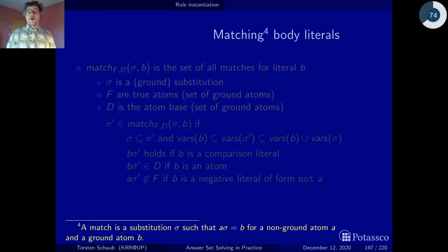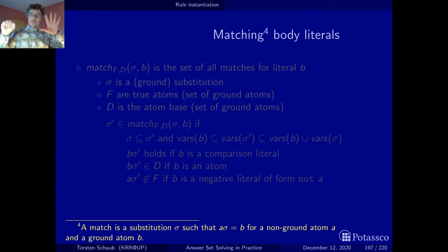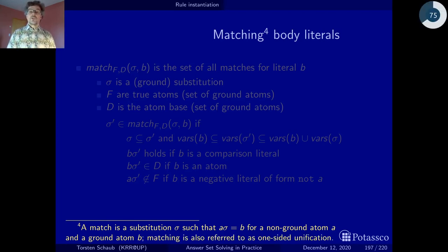To this end, we can do this by looking for a unifier — a substitution that replaces all the variables so that we get the same atom. This is called a match. A match is a substitution that replaces all the variables in a non-ground atom so that once the variables are replaced by ground terms, you get an atom that is the same as another atom. Matching is also regarded as a one-sided unification — just for those who have heard about unification but not about matching.